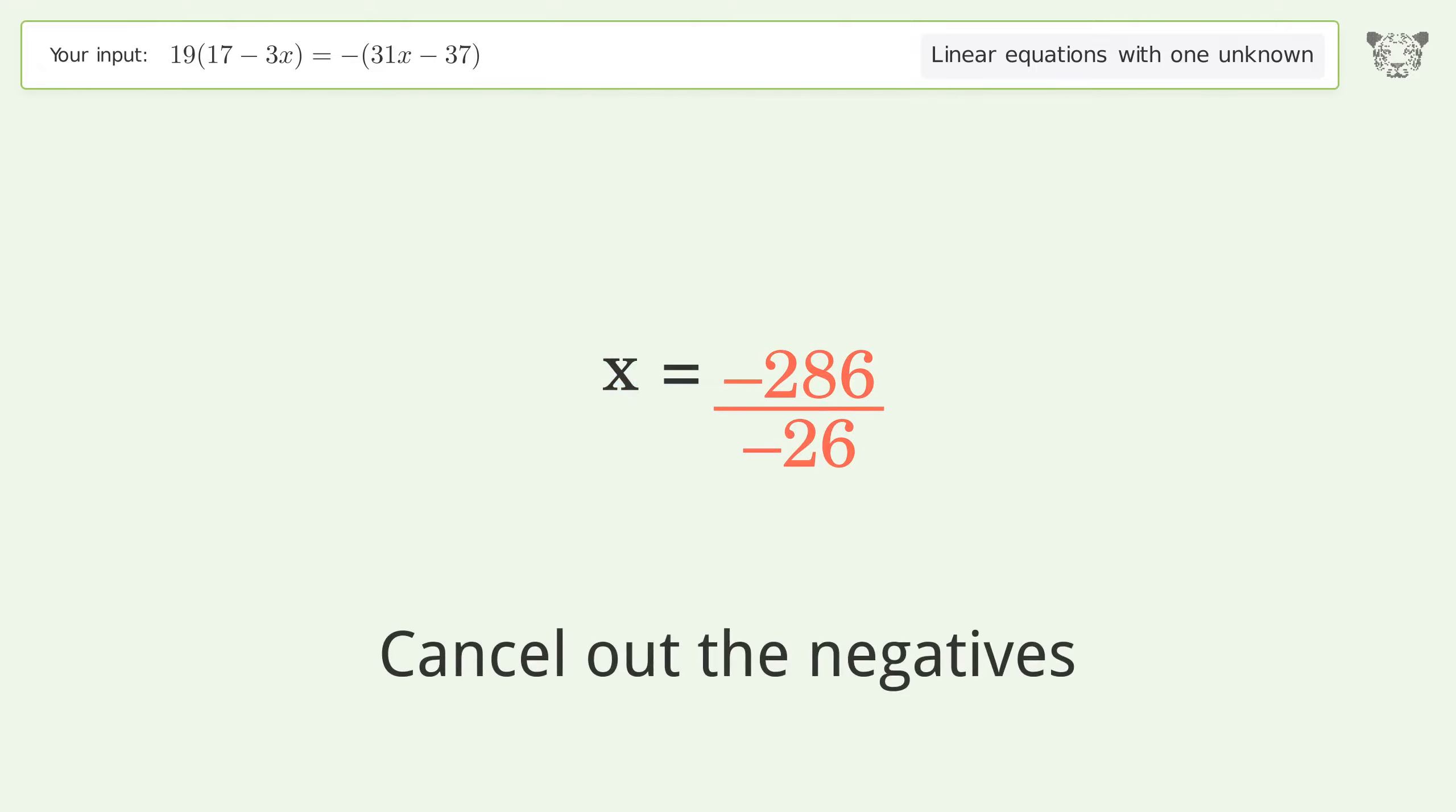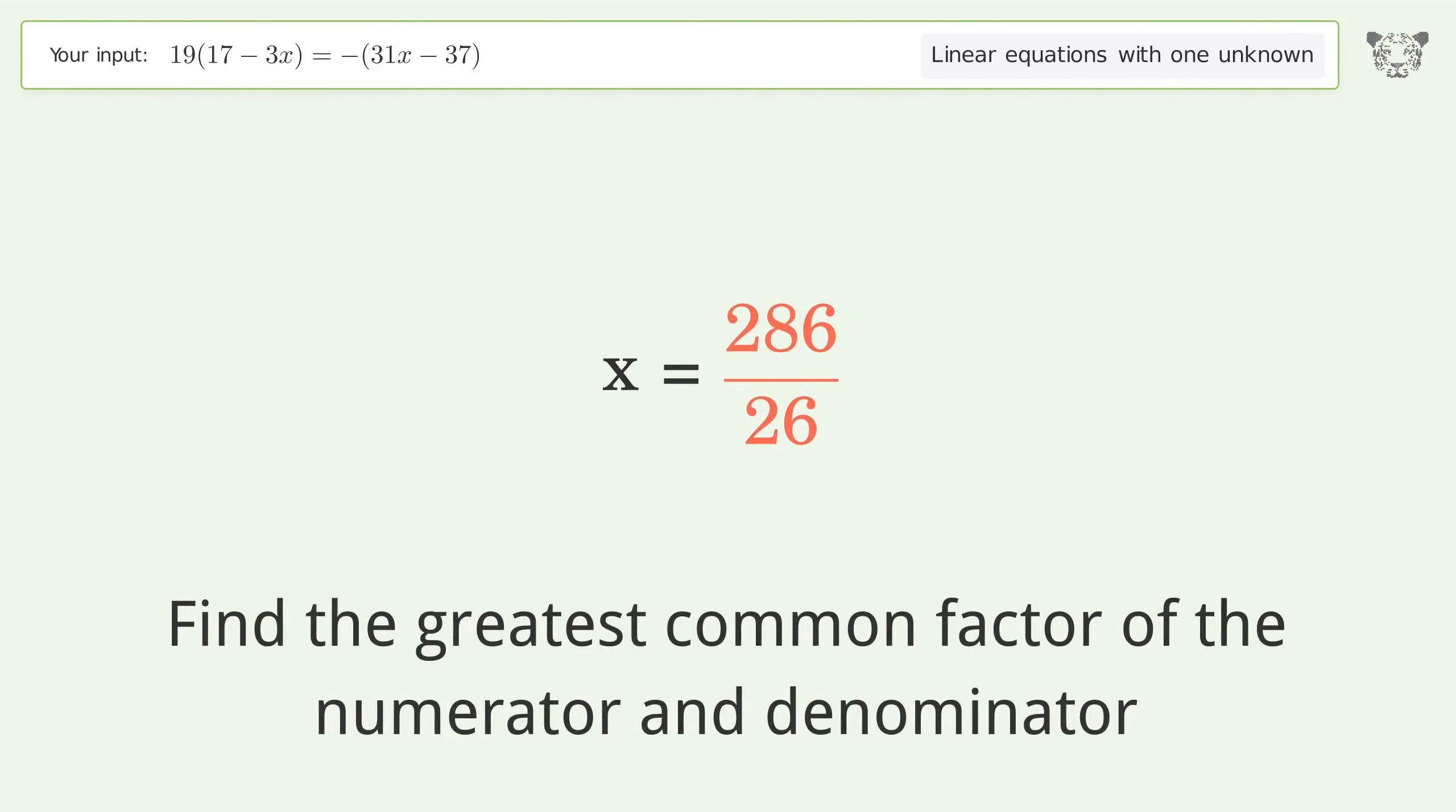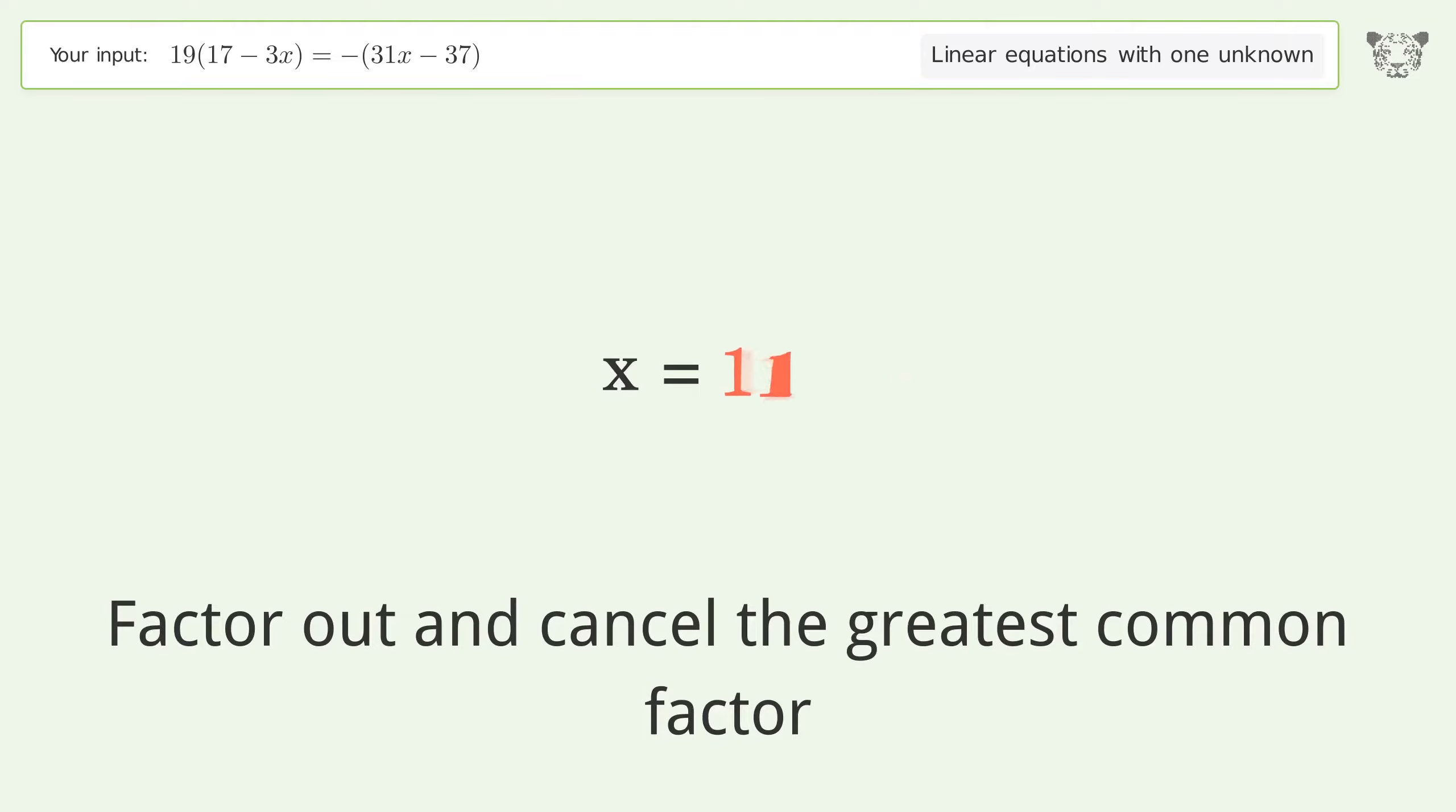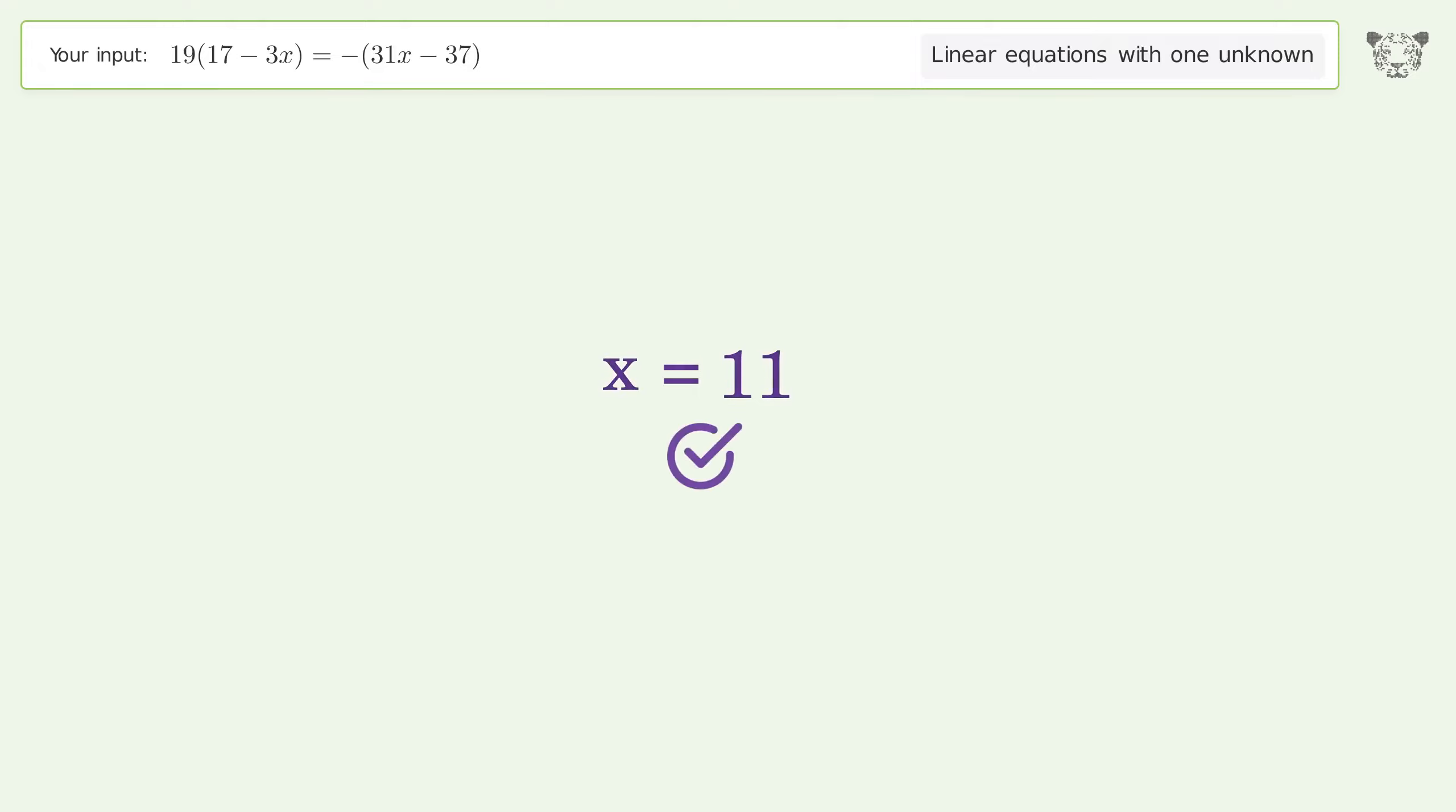Cancel out the negatives. Find the greatest common factor of the numerator and denominator. Factor out and cancel the greatest common factor. The final result is x equals 11.